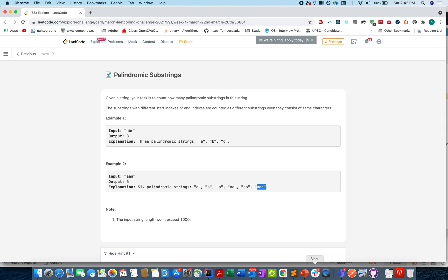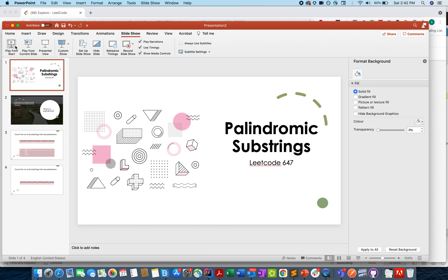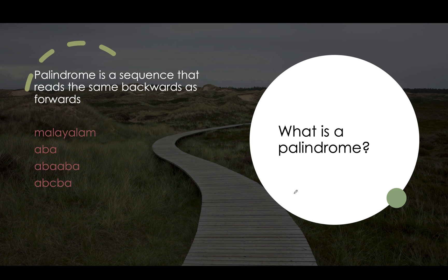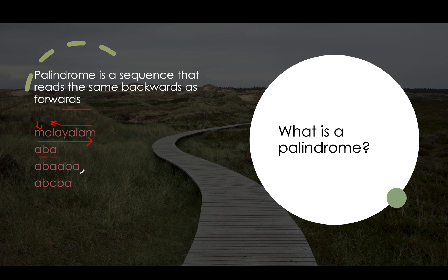Without much ado, let's look at the presentation I've created for this. Let's discuss what a palindromic string is for those who are not aware. It's a sequence that reads the same backwards or forward. 'Malayalam', one of the Indian languages, is a palindromic string — if you read it from backward or forward direction, it reads the same. Similarly, 'aba', 'abba' — reading from either direction gives the same result. We also have 'abcba', a palindromic string of length five.